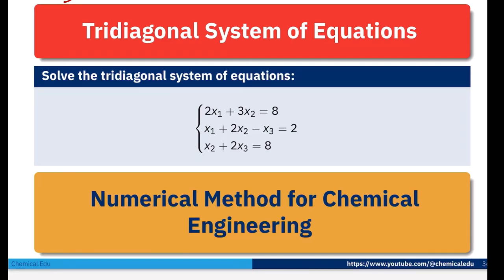Today I talk about diagonal system of equations. Here is the system of equations — a tri-diagonal system like: 2x1 plus 3x2 is equal to 8; x1 plus 2x2 minus x3 is equal to 2; x2 plus 2x3 is equal to 8. This is a tri-diagonal system.